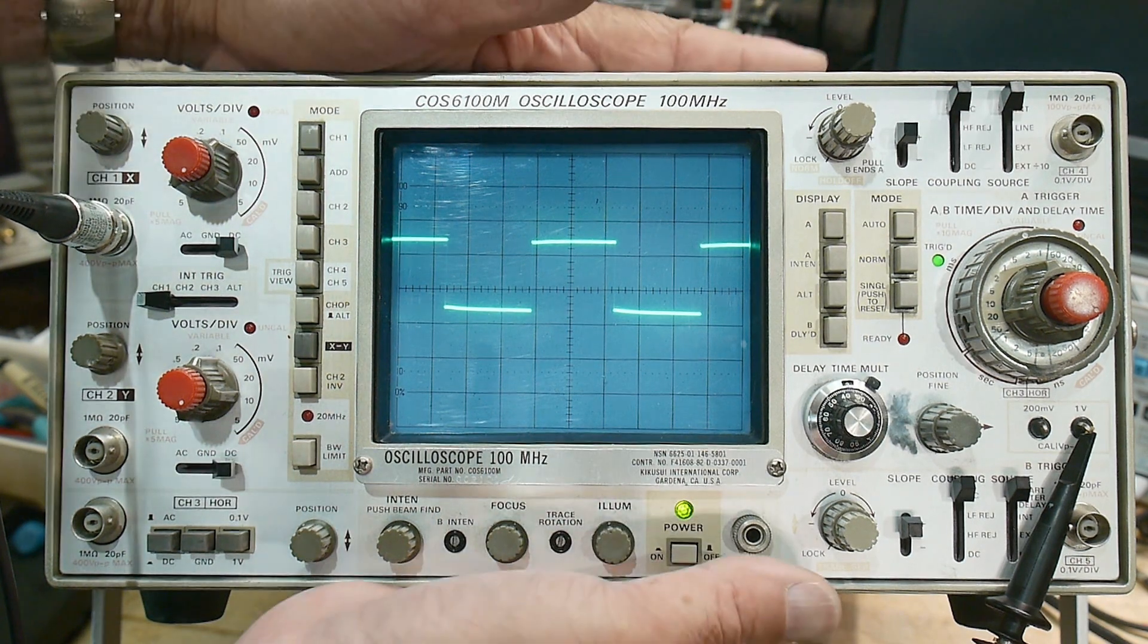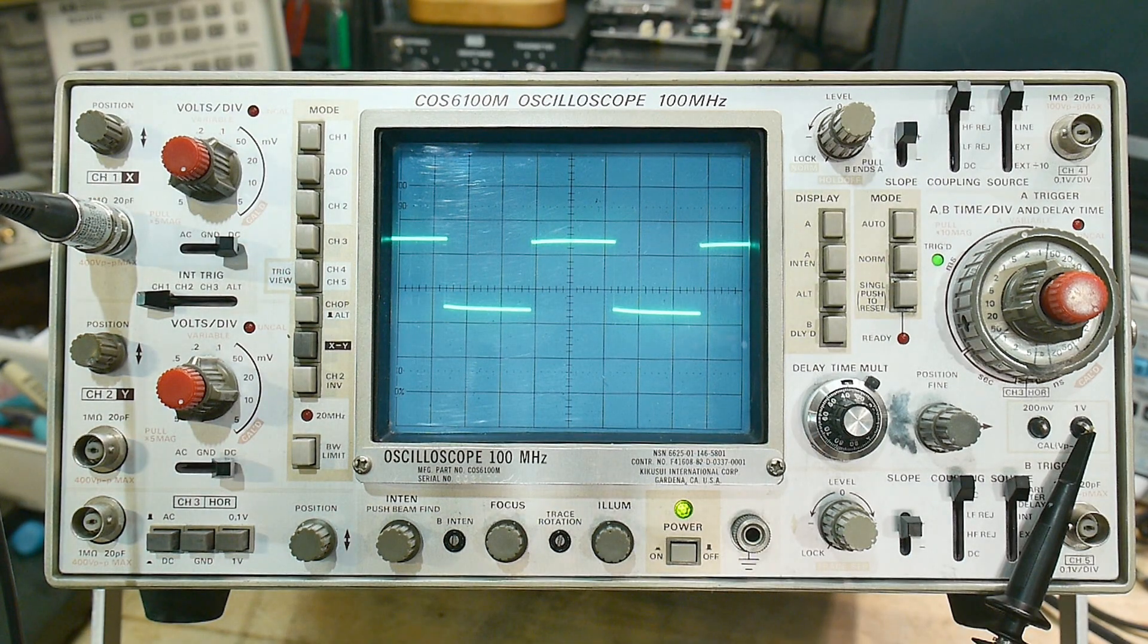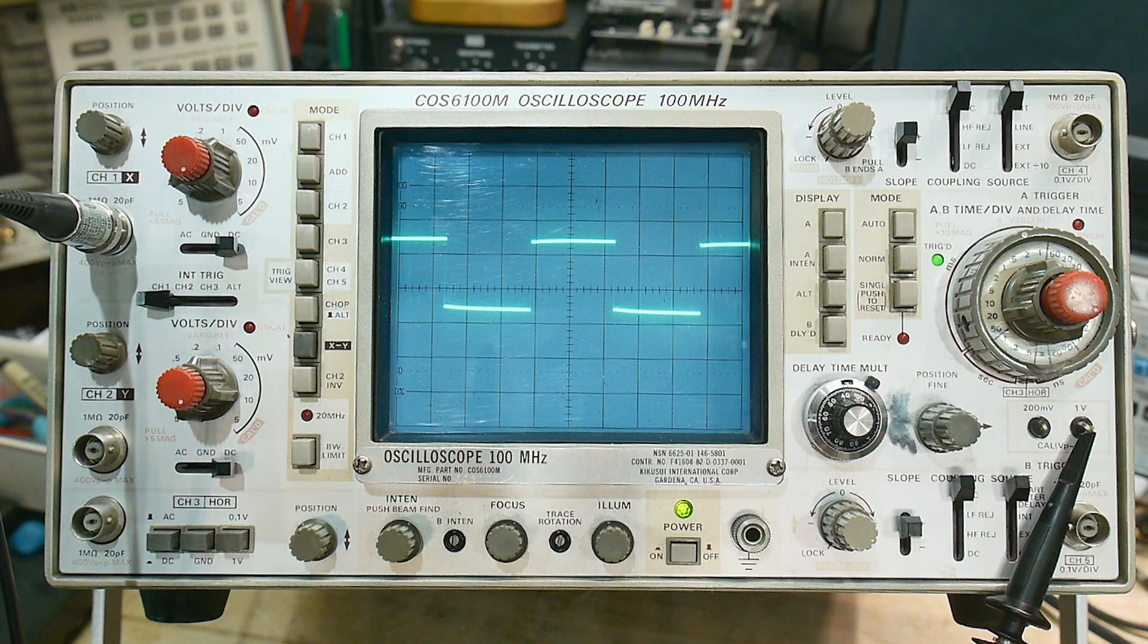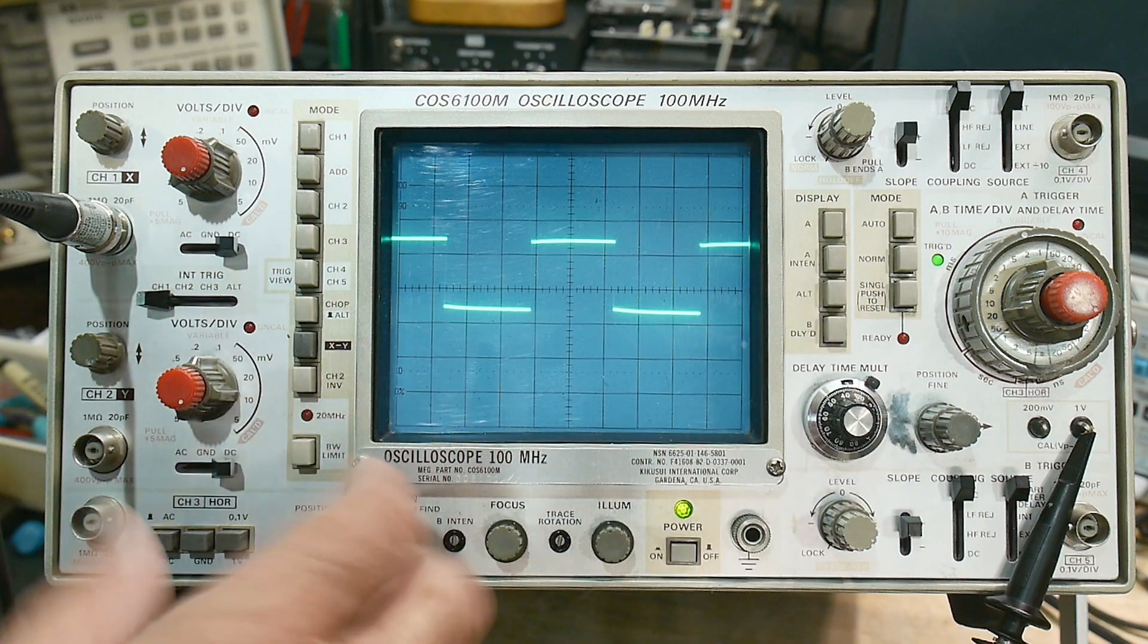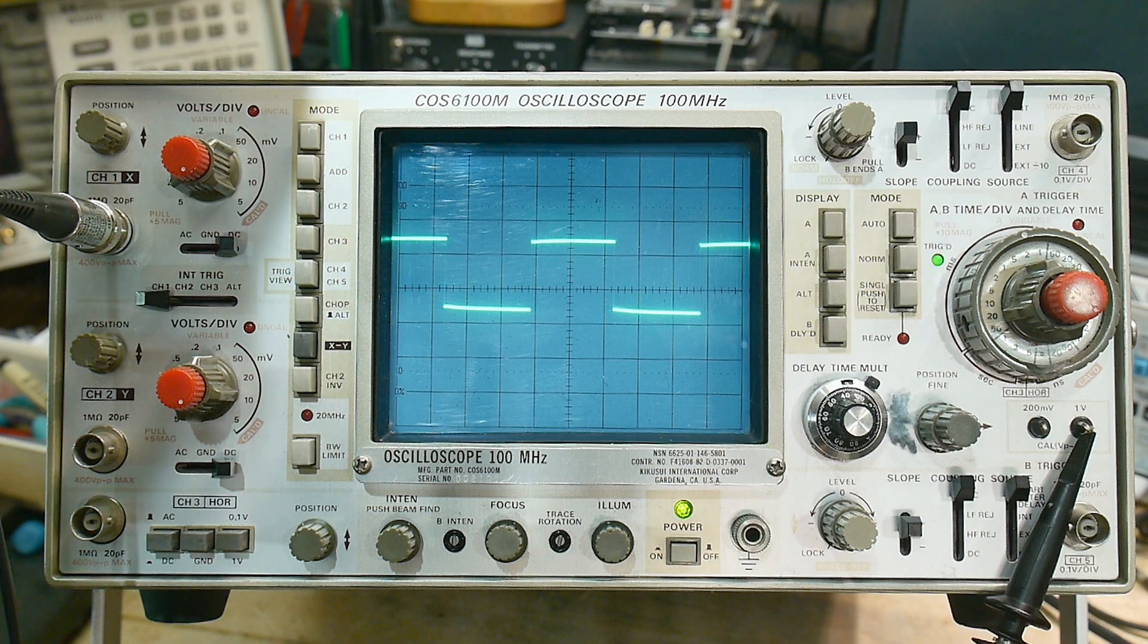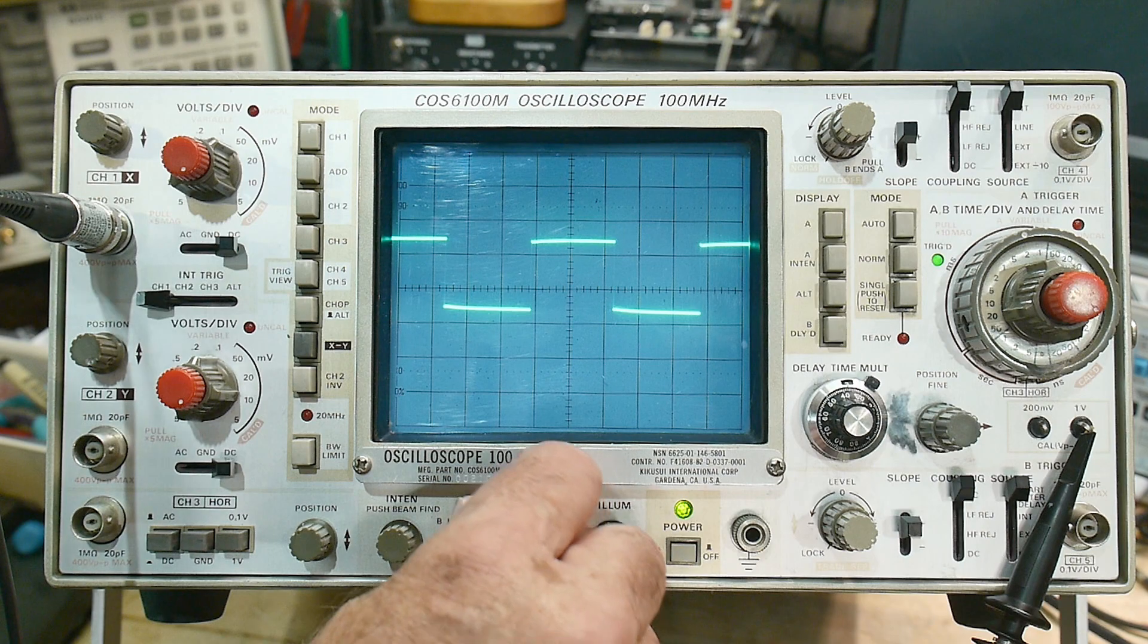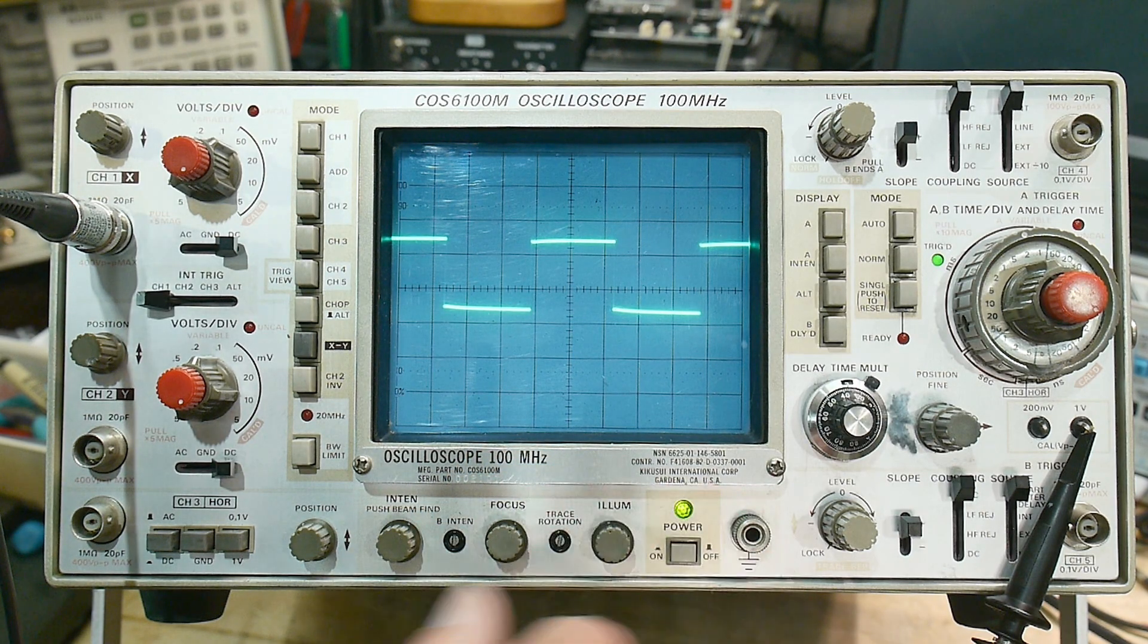So for $58 I got one that's completely working. So now my broken scope is my donor scope, in case this one ever goes bad. But anyway, I couldn't let the other one sit. I really wanted to look at this scope, I was fascinated by these five channels, and I also had ideas of a particular video series I wanted to do.